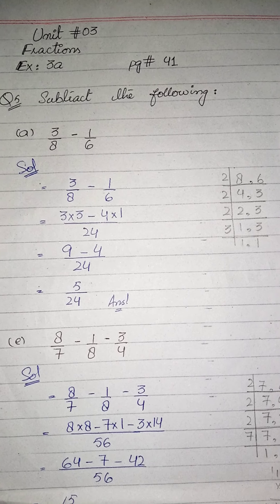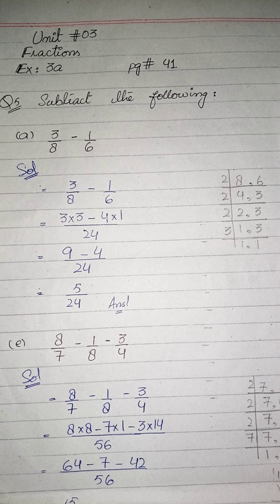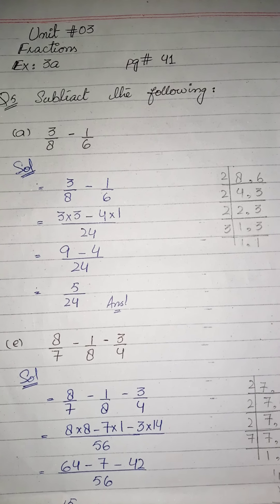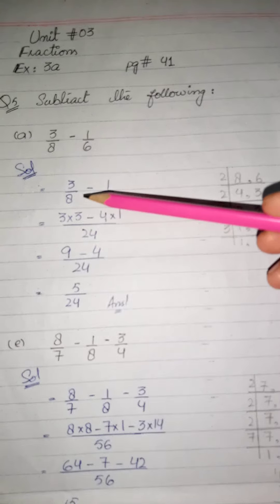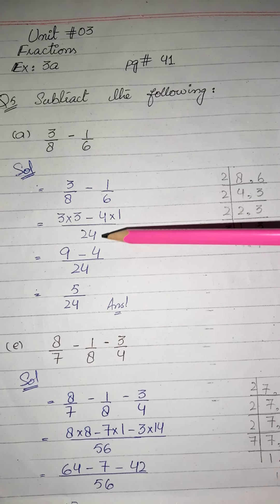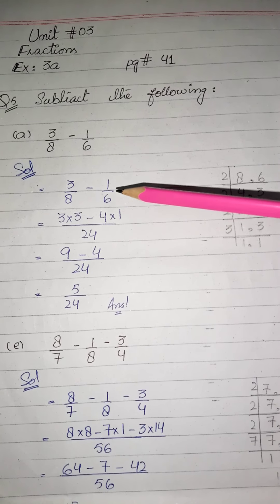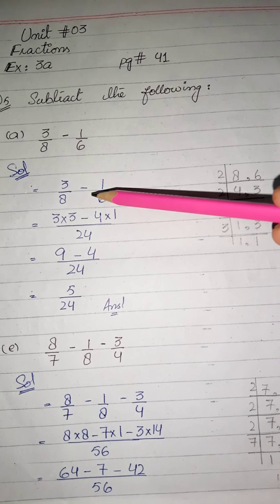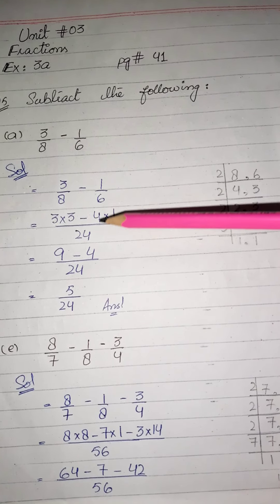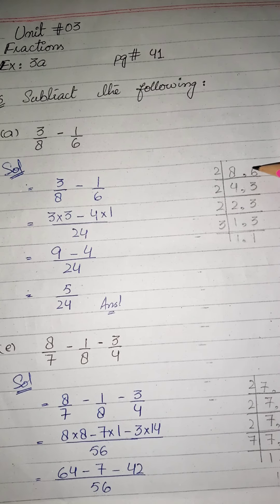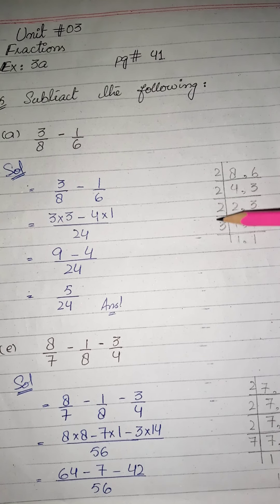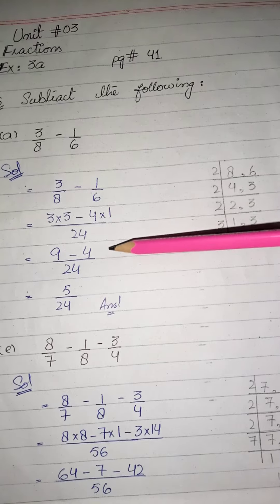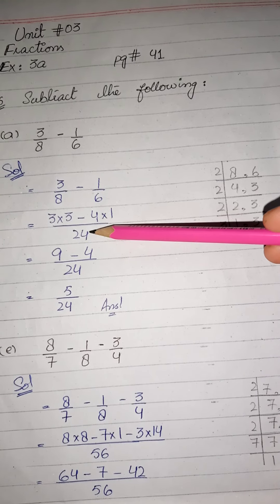Question number 5, part (a): 3/8 minus 1/6. سب سے پہلے ہم لیں 8 اور 6 کا LCM. جیسے ہم نے addition میں کیا تھا، subtraction میں بھی same way ہوگا۔ 8 اور 6 کا LCM لیا تو ہمارے پاس یہ factors آئے۔ ان کو multiply کیا تو ہمارے پاس آیا 24۔